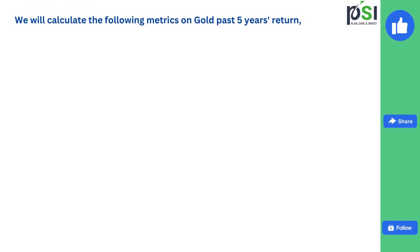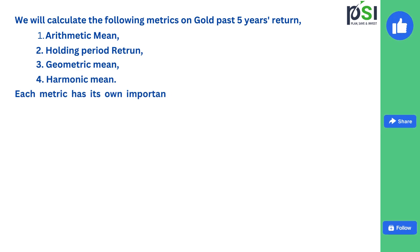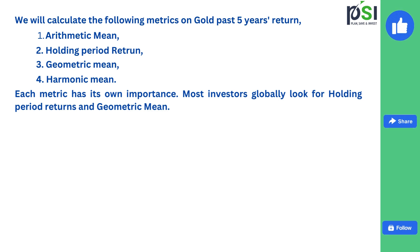We will calculate the following metrics on gold's past 5 years returns: arithmetic mean, holding period return, geometric mean, and harmonic mean. Each metric has its own importance. Most investors globally look for holding period returns and geometric mean — these two are very important. Let us see how to calculate them and how to evaluate them.